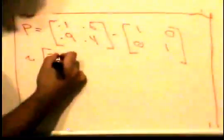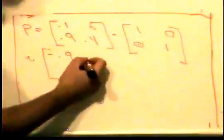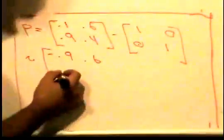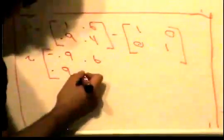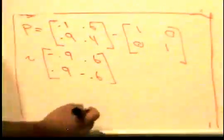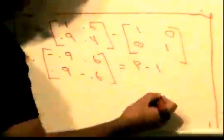When we do this we get 0.1 minus 1 is negative 0.9, then we get 0.6 minus 0 which is still just 0.6, then we get 0.9, and then 0.4 minus 1 which is negative 0.6. So this is our P minus identity matrix.